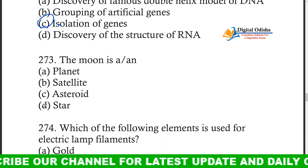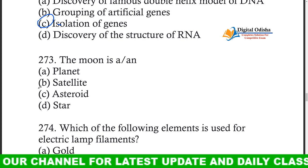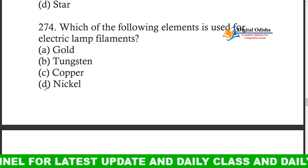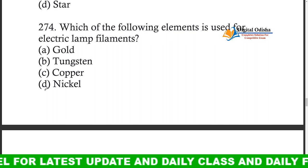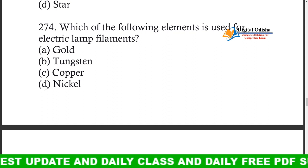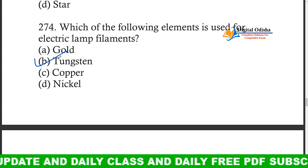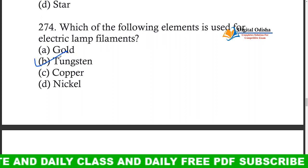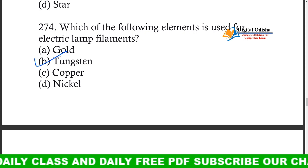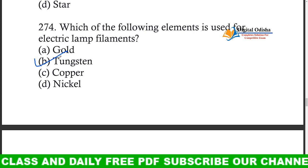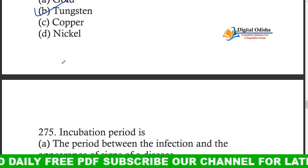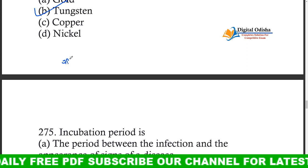The moon is a satellite. Which of the following elements is used for electric lamp filaments? Options: gold, tungsten, copper, nickel. The answer is obviously tungsten, which is used for electric lamp filaments.